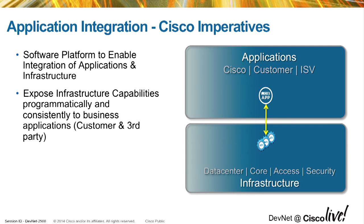To address this problem, we need to do two things. One is to build a pure software platform to connect enterprise applications to infrastructure — pure software platform — so that you get the scalability, programmability, and all the features you expect from software. The second piece is you need a consistent way of exposing infrastructure capabilities to be consumed by an application. Everything around APIs so that it's consistent and well understood — that's the way you want to address this problem.